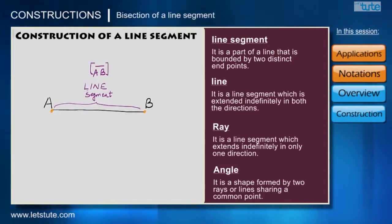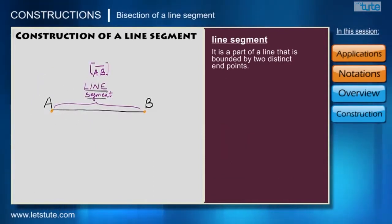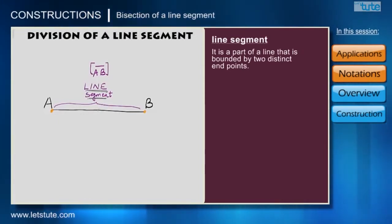Now we know what we mean by a line segment. But at times we are asked to divide a line segment. If I am dividing this line segment in exactly two halves, I would name this point M. I will get two smaller line segments named AM and MB. I have divided them in a ratio of 1 is to 1, which means in equal ratio.